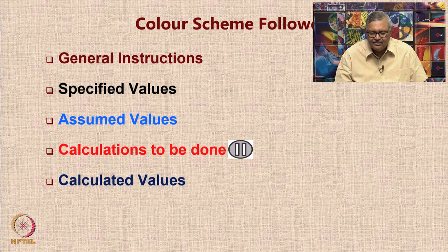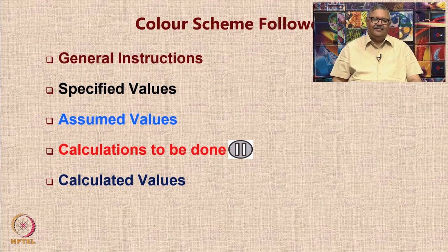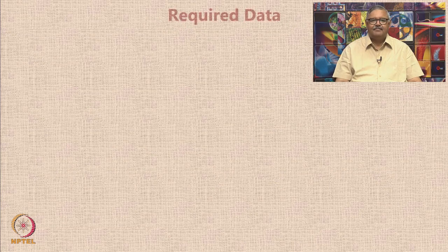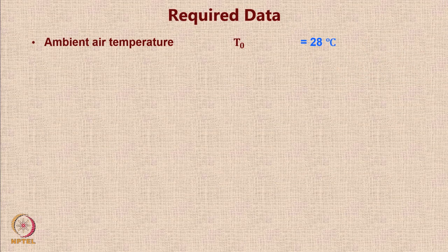Looking at the color of the slide and the entries, you will be able to figure out which category each item belongs to. Let us see what the required data is — the first thing we need is ambient air temperature.